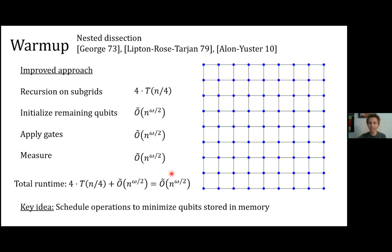The key idea is to minimize the number of qubits stored in memory at any given time, since runtime depends on that number. This approach is all about scheduling which operations to perform and when — choosing which qubits to initialize and which gates to apply in a clever order. We tried to generalize this to arbitrary planar graphs, but were unable to either find or rule out such an ordering, which led us to use tree decompositions.